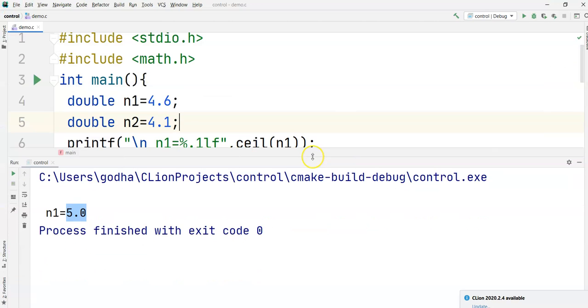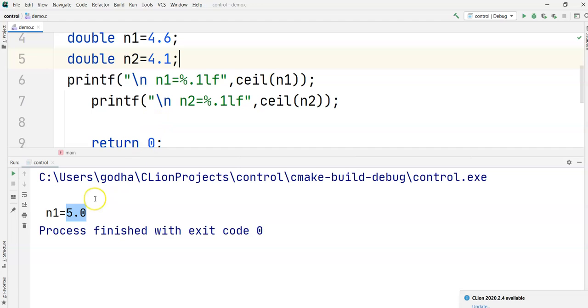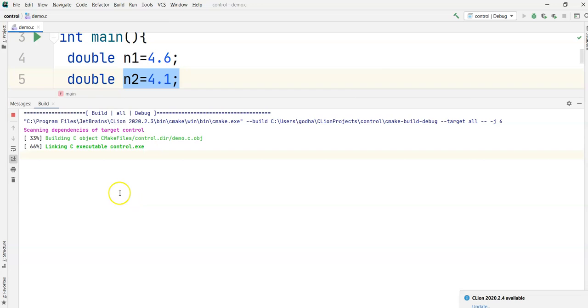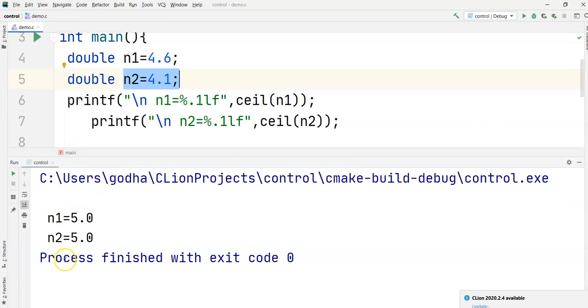So we should expect the output as 5.0 for n2 as well. We can see that n2 is also returning 5.0. So this is how a ceil function will work in C programming. Thank you.